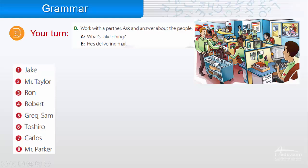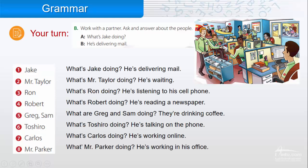Two is Mr. Taylor. Here is Mr. Taylor. 'What's Mr. Taylor doing?' 'He's waiting.' Three: Ron. This is Ron. 'What's Ron doing?' 'He's listening to his cell phone.' Four: Robert. 'What's Robert doing?' 'He's reading a newspaper.'